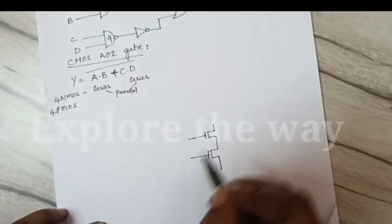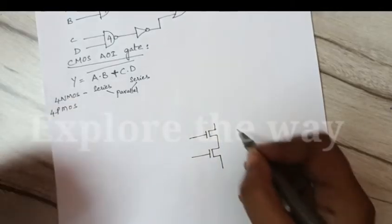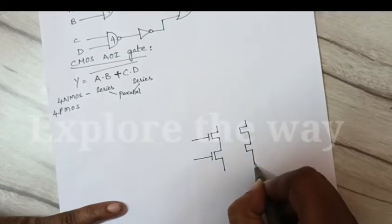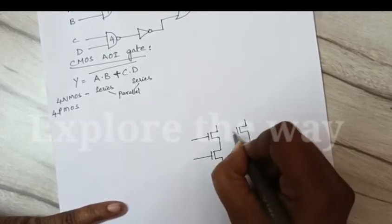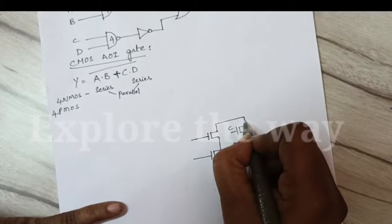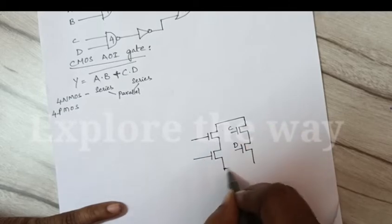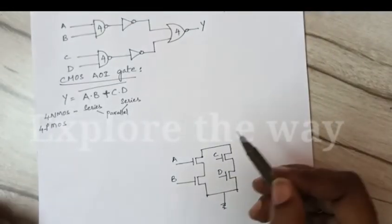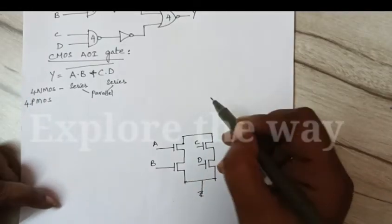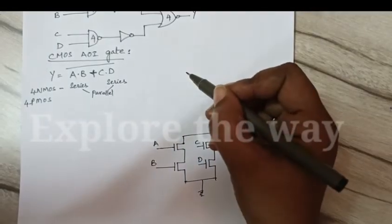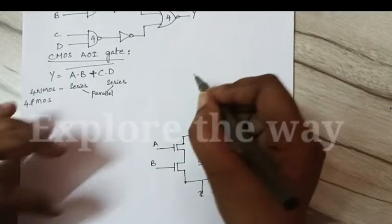We should connect AB in series. CD also in series. These 2 series combinations must be in parallel. And coming to PMOS network, because AB are connected in series, here in the pull-up network AB must be connected in parallel.